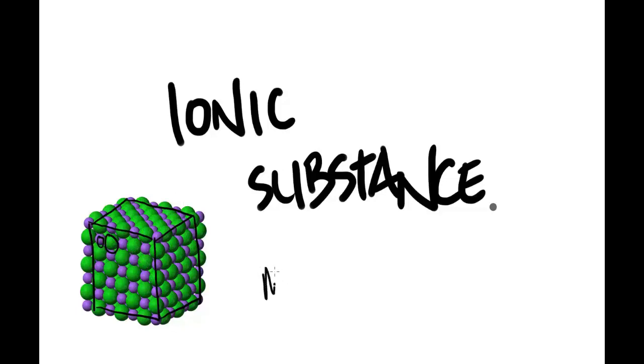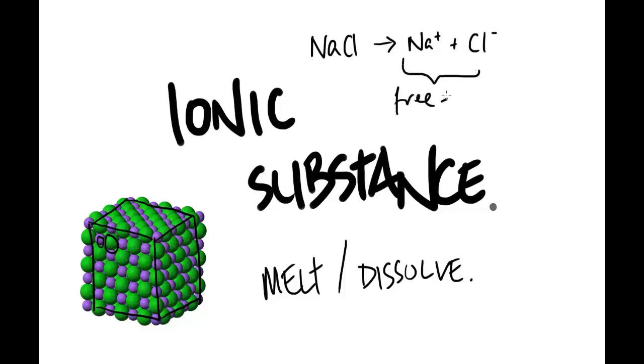But if we melt this or we dissolve it into solution then electricity will flow. And that's because when we dissolve this, in the case of something like sodium chloride, the sodium chloride molecule splits into the ions. And what happens is these are now free to move. And by being able to move it actually means now they can carry the current. And so our lamp or whatever we had within our circuit would obviously now light, because there is a current, therefore electricity is flowing.